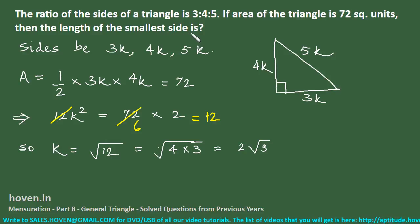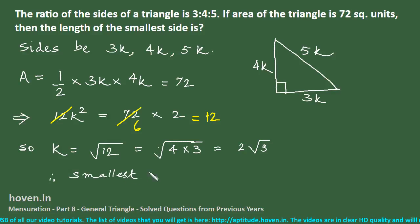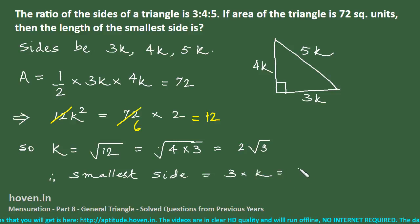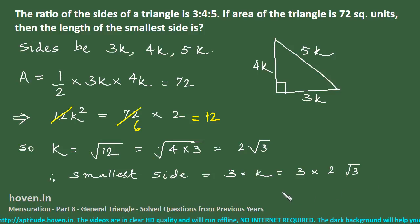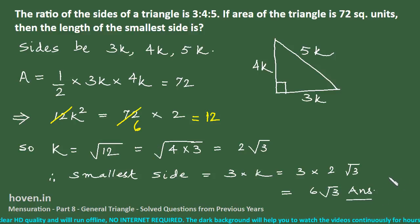The smallest side = 3k = 3 × 2√3 = 6√3, which is the answer.